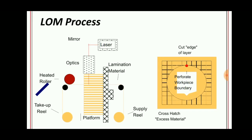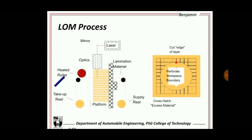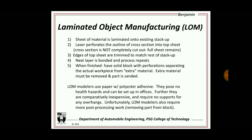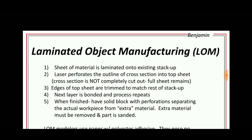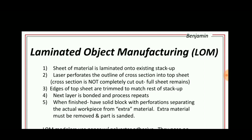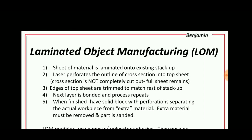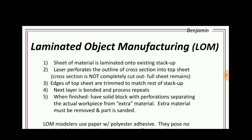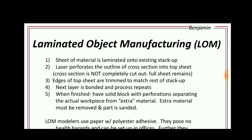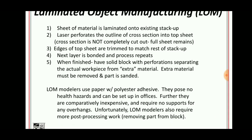The process is repeated until the required shape is obtained. The procedure can be seen in this slide: a sheet of material is laminated onto the existing stack, the laser perforates the outline of a cross-section into the top sheet, edges of the top sheet are trimmed to match the rest, the next layer is bonded, and the process repeats until finished, forming a complete solid block shape.